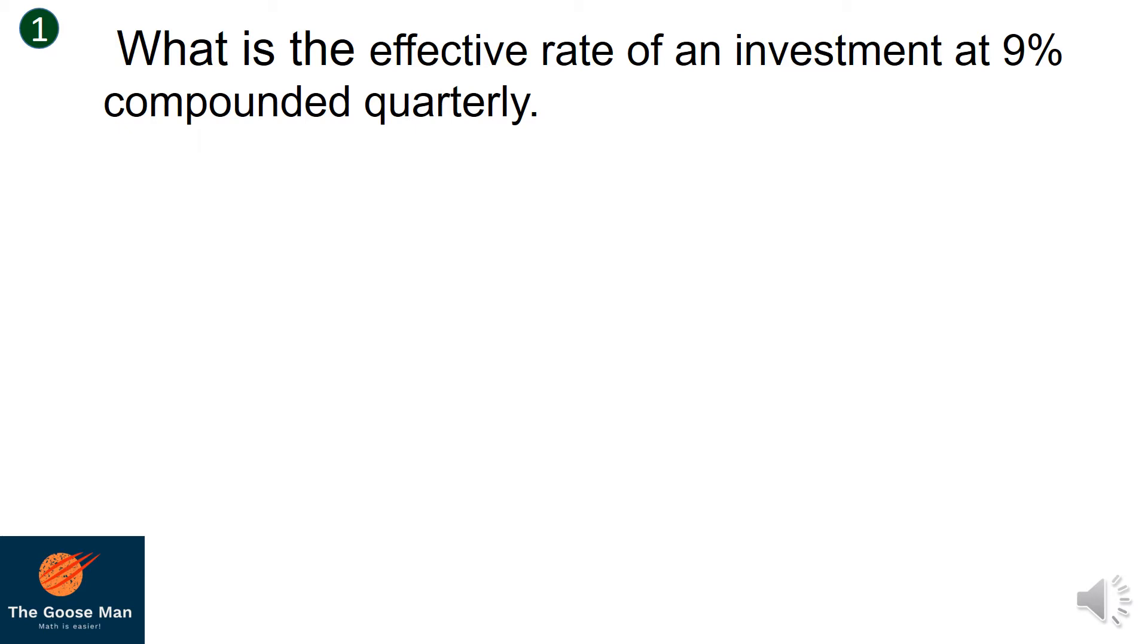Let us consider this example. What is the effective rate of an investment at 9% compounded quarterly? Before we solve this, let's identify the given. The nominal rate r equals 9% and n equals 4. Take note, our frequency equals 4 because it will be compounded quarterly.